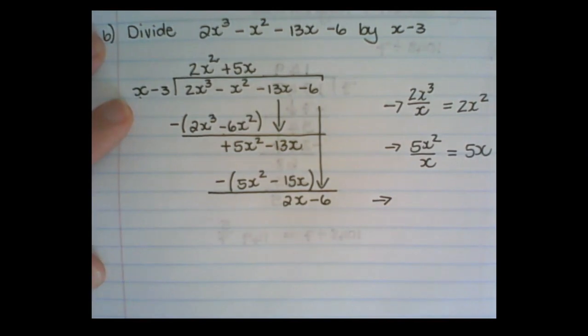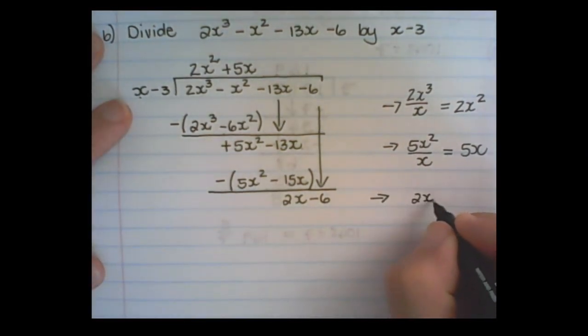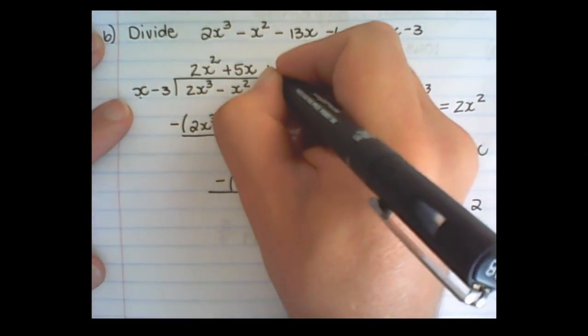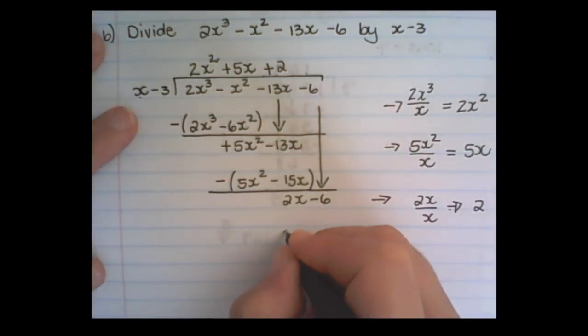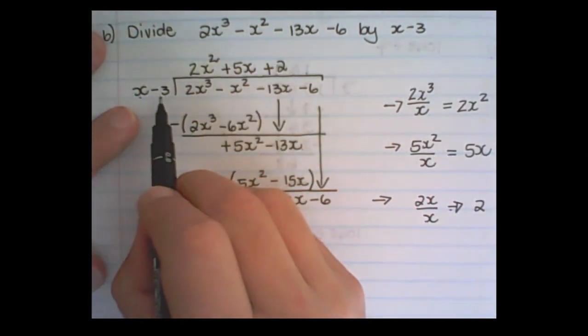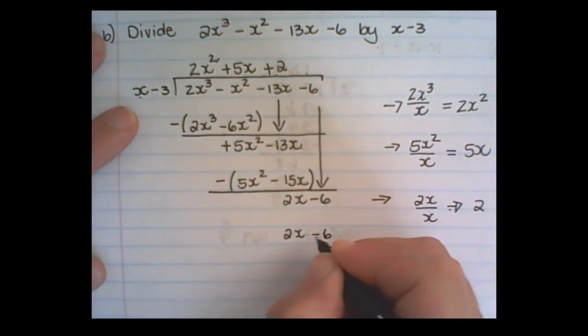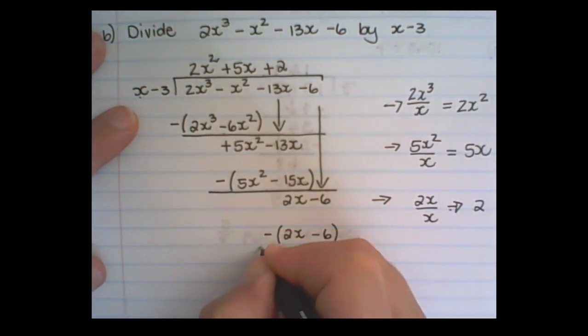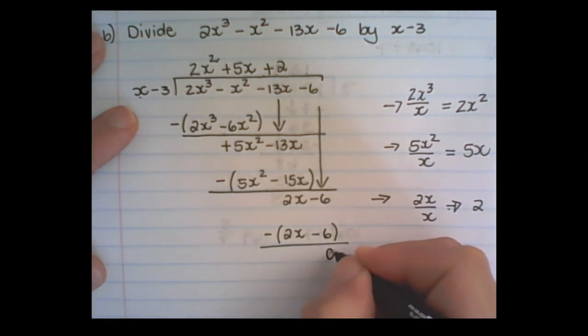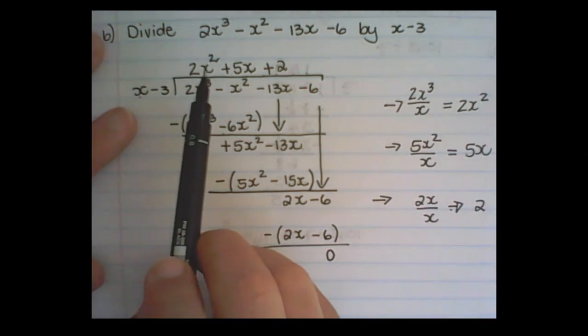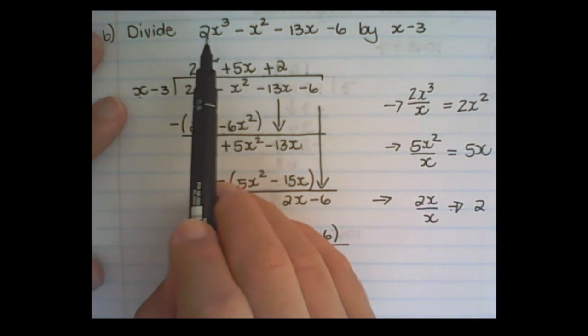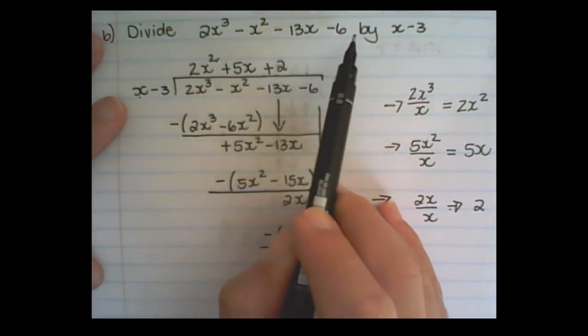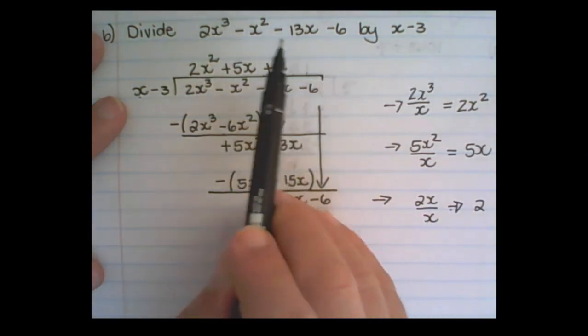Then in this step I'm going to divide 2x with x, which will give me 2. So that is plus 2. I take that plus 2 multiplied with x, which is 2x. And plus 2 multiplied with negative 3, that is negative 6. But remember I subtract this part. So the remainder now is 0. That means that x minus 3 can go perfectly into 2x cubed minus x squared minus 13x minus 6. So if I divide these there is no remainder.